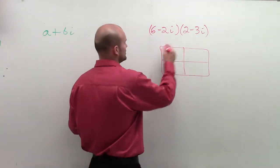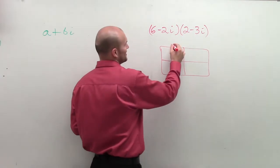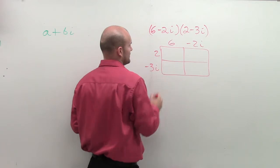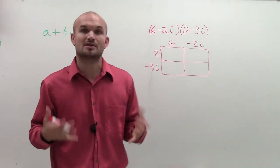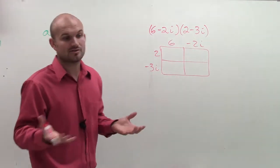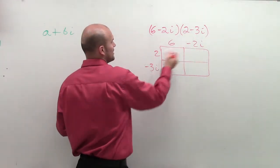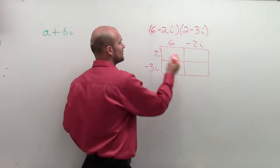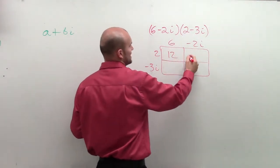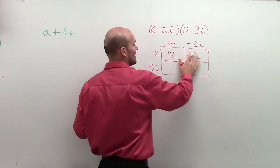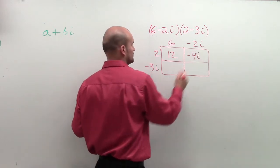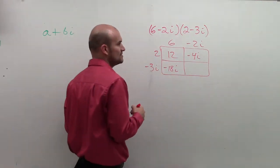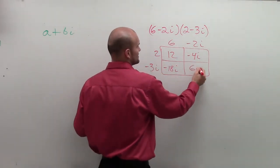So what you're going to do is put one binomial on top and the other binomial on the side. Multiplying produces a product representing the area, so each cell inside the rectangle represents the area of that section. 2 times 6 is 12, 2 times negative 2i is negative 4i, 6 times negative 3i is negative 18i, and negative 3i times negative 2i is positive 6i squared.